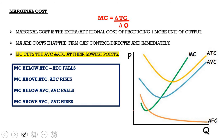Marginal cost is the additional cost of producing one extra unit of output, calculated as the change in total cost over the change in quantity. Marginal costs are costs the firm can control directly and immediately. Very importantly, the MC curve cuts both the AVC curve and the ATC curve at their lowest points — when drawing this graph in a test, make sure MC intersects ATC and AVC at their lowest points, otherwise you will lose marks.